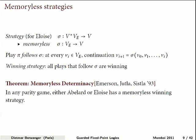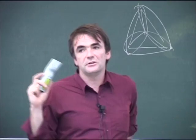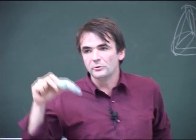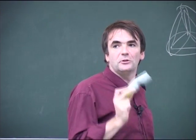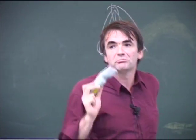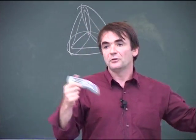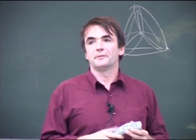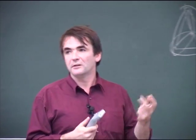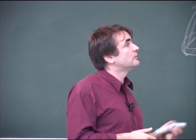A strategy for one of the players is a function that tells, for a given prefix, how to continue. We mostly talk about memoryless strategies — functions that just tell you at one node which successor to choose. Following a strategy means whenever you are asked to move, you look at your current node and apply the strategy. A winning strategy is one that guarantees you will win all plays if you follow it.